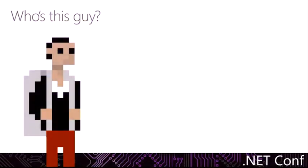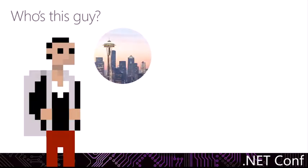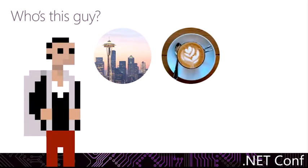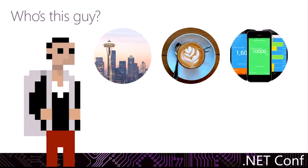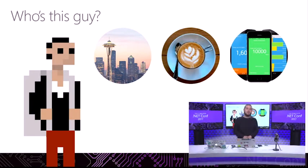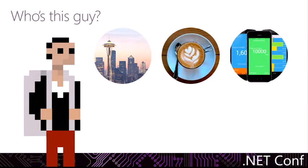First, I'll introduce myself. I'm James Montemagno. I'm a Principal Program Manager here at Microsoft, formerly on the Xamarin team at Xamarin. I've been a mobile developer for over six years now. I live here in the bright, sunshiny city of Seattle, Washington, where I drink way too much coffee and build tons of great mobile applications. I love every single part of my job — coming here to .NET Conf and other conferences around the world, building awesome apps and libraries, essentially anything to enable developers to build awesome apps even faster.